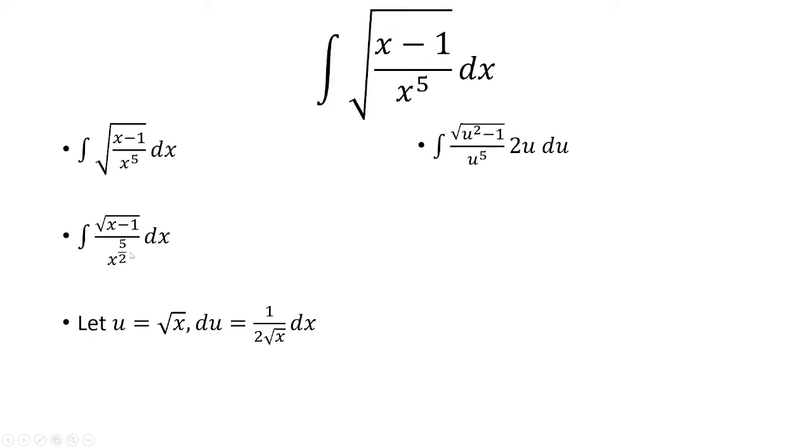Now x to the 5 halves power is basically the square root of x raised to the 5th power, which is u to the 5th. Now with du, I solve for dx here. And I get that dx is equal to 2 times the square root of x du, which the square root of x is just u. So that's just 2u du. And that's what we have over here.